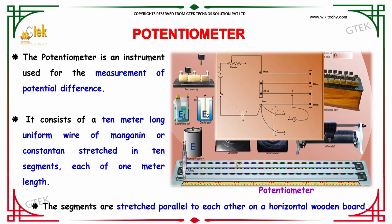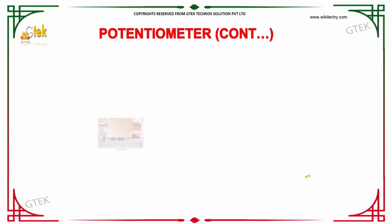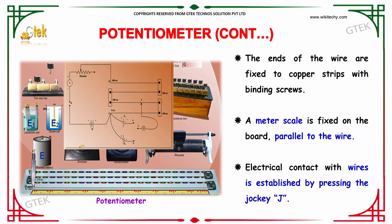The segments are stretched parallel to each other on a horizontal wooden board. The ends of the wire are fixed to copper strips with binding screws. A meter scale is fixed on the board parallel to the wire.